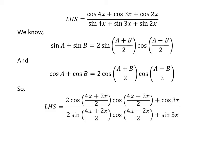Applying the above identities to cosine of 4x plus cosine of 2x in the numerator and sine of 4x plus sine of 2x in the denominator gives us the left hand side equal to 2 times cosine of (4x plus 2x) upon 2 times cosine of (4x minus 2x) upon 2.